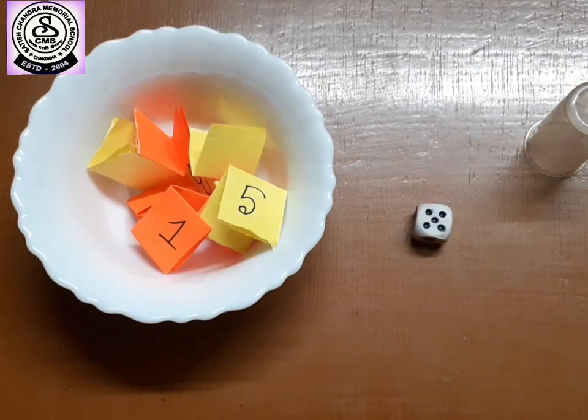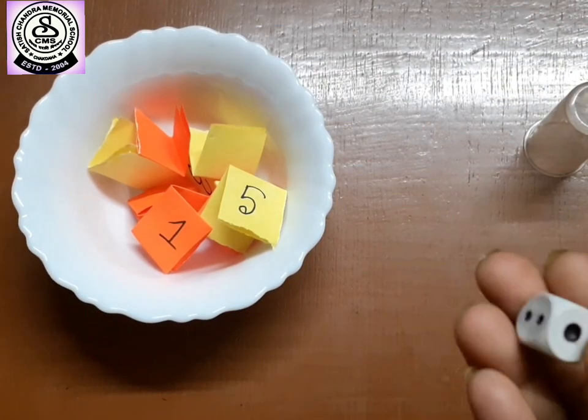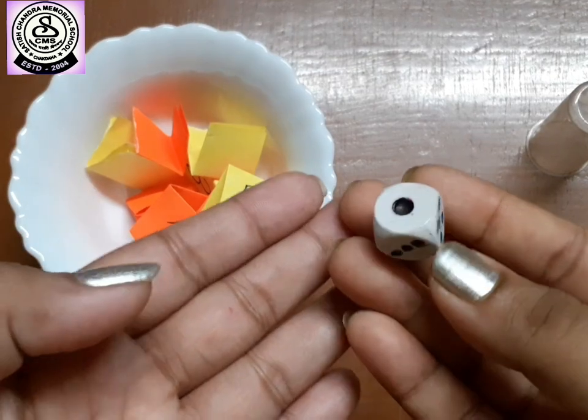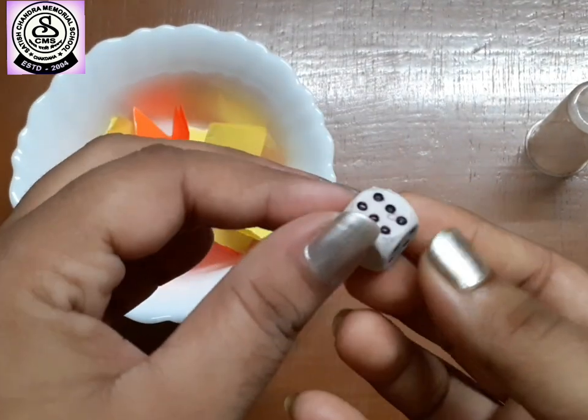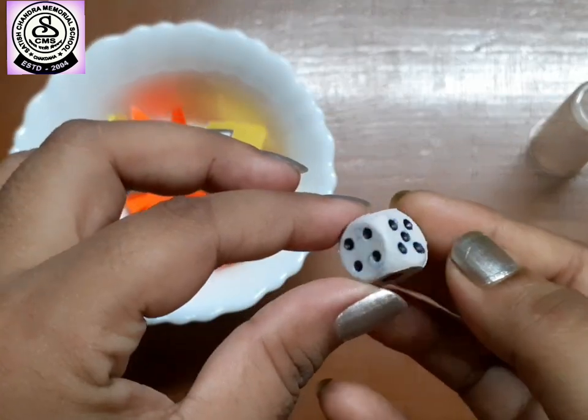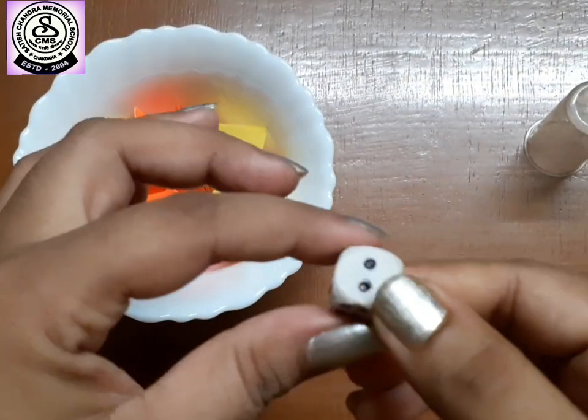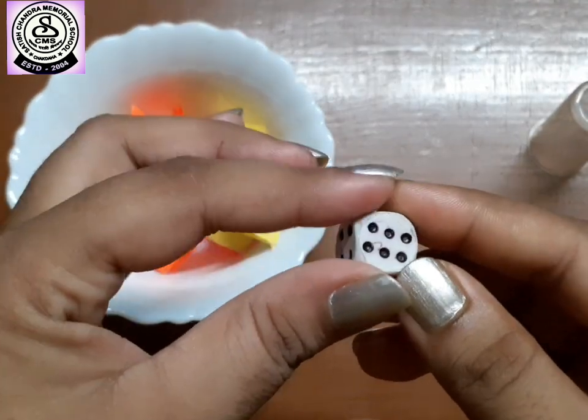So, here is our first game. For this, we need one dice. This is a solid figure. In Bangla, we call it as Ludor Chakka.